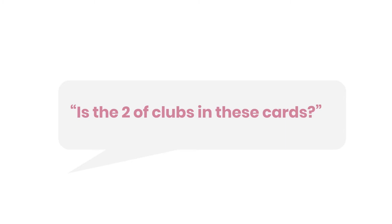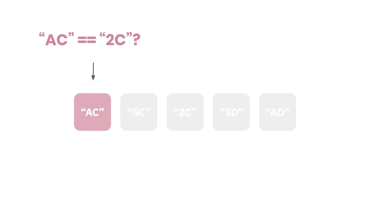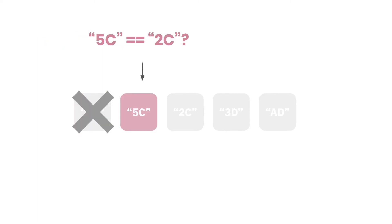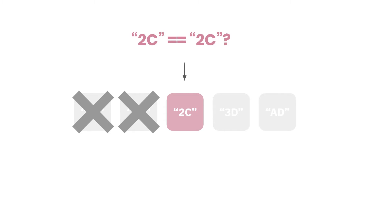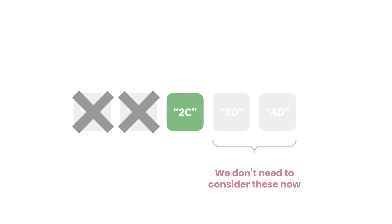Say we're asked: is the two of clubs in these cards? Using a linear search, we start at the first card — AC — and ask: is ace of clubs equal to two of clubs? No. We move to the next: is five of clubs equal to two of clubs? No. We move on again: is two of clubs equal to two of clubs? Yes — we found it. We can return that it's in the array, specifically at position two. Once found, we don't need to check cards after this.